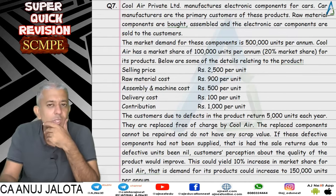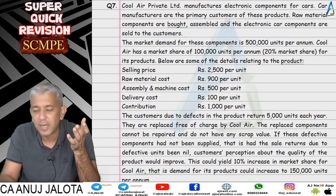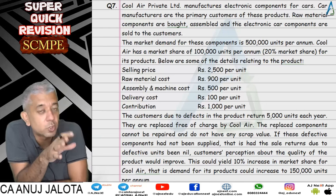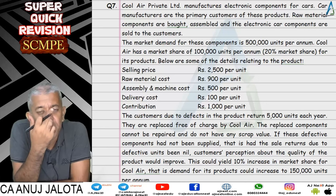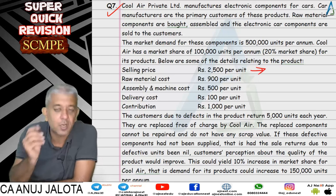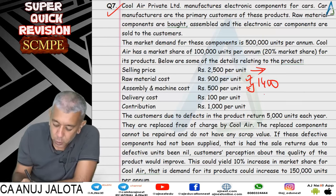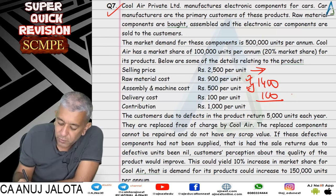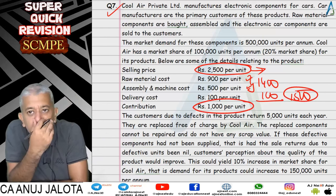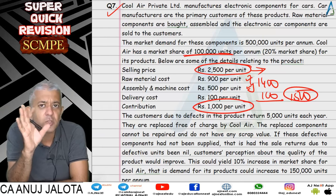Question 7 was slightly controversial — I changed the answer and told students about it in class. Initially in 2019 I identified it as a flaw in the paper, and in 2021 new modules resolved it. The question: a product with selling price 2,500, material and assembly cost totalling 1,400, plus delivery cost of 100, giving variable cost of 1,500. Contribution = selling price minus variable cost. Currently market share is 1 lakh units — 20 percent of a 5 lakh market.